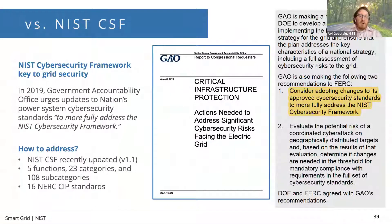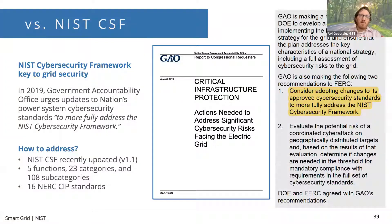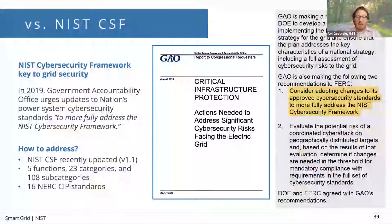There are a lot of folks who really want to see a better linkage between NIST's cybersecurity risk management strategies and the requirements in these individual standards. As a matter of fact, GAO in a report released in 2019 made the following recommendation to FERC: consider adopting changes to its approved cybersecurity standards to more fully address the NIST Cybersecurity Framework. The challenge is that if we don't clearly understand how the NIST Cybersecurity Framework relates to the NERC CIP standards — which are the requirements that FERC uses and enforces — then how do we even know where to begin?